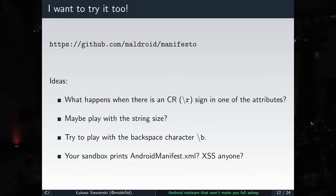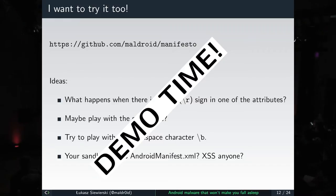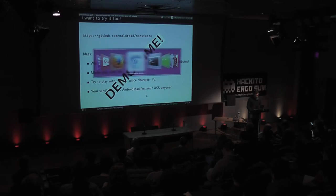I wrote a small tool that can obfuscate the manifest. You can see what happens when you put a carriage return in the attribute name — if you display it with 'less', the whole line gets erased and a new one starts. You can also play with string sizes, backspace characters (which get rendered as backspace in some editors), and since some sandboxes print the AndroidManifest.xml, you can even put HTML in there to see what happens.